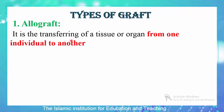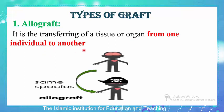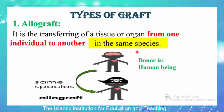The first type of graft is the allograft. In this type, there is a transferring of a tissue or organ from one individual to another in the same species. For example, the donor is a human being and the recipient is also a human being. Referring to the example of Sammy, when he gets the transplant from Rami, this would be an allograft. This type can also occur from a dog to another dog or from a cat to another cat.